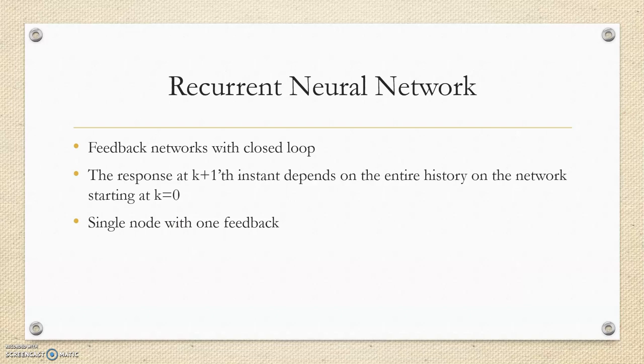Recurrent Neural Network. Recurrent Neural Network is a type of feedback neural network. Feedback Networks with closed loops are called Recurrent Networks. The response at k plus 1th instant depends on the entire history of network starting at k equals 0.